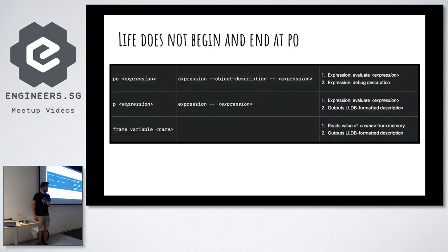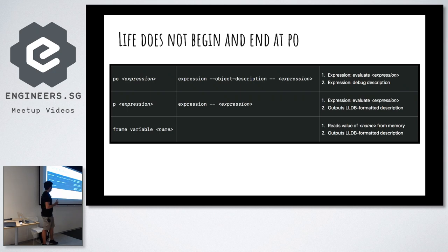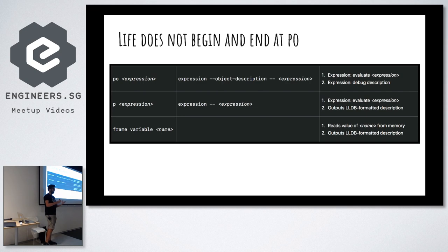LLDB has two more ways for you to print objects. One is `p`, which stands for expression — it will just evaluate whatever expression you give it. The only difference is that when it prints, it will use the LLDB formatter rather than going to runtime and calling `debugDescription`. LLDB itself has its own formatter to format objects, which I'll show you later.